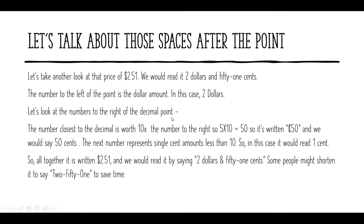Now let's look at the numbers to the right of the decimal point. The number closest to the decimal point is worth ten times the number farthest to the right. So the five in $2.51 equals fifty cents. The next number represents single amounts less than ten — in this case, one cent. All together, it is written $2.51, and we read it as 'two dollars and fifty-one cents.' Some people may shorten it and just say 'two fifty-one.'